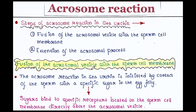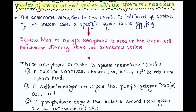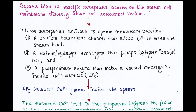First, fusion of the acrosomal vesicle with the sperm cell membrane. The acrosome reaction in sea urchin is initiated by contact of the sperm with specific sugars in the egg jelly. These sugars bind to specific receptors located on the sperm cell membrane directly above the acrosomal vesicle. These receptors activate three sperm membrane proteins.